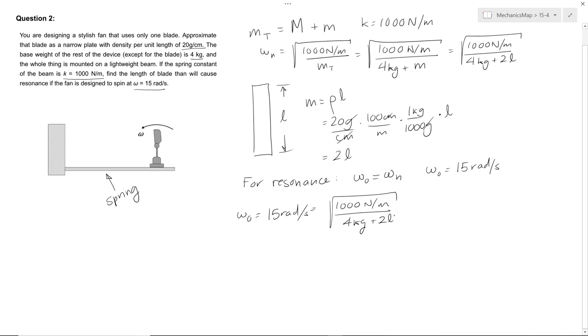Square both sides, and we get 225 equals 1,000 over 4 plus 2L. And we get 900 plus 450L. Shift that 900 over to the other side, we get 450L equals 100, and L equals 0.22 meters.